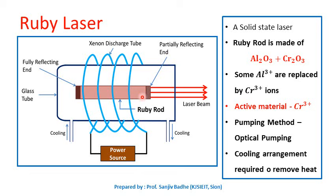Generally, in a ruby laser, a ruby rod of length 4 cm and diameter of 0.5 cm is used. The pumping method used is optical pumping. A xenon flash tube around the ruby rod provides the light energy to excite the chromium ions from the lower level to higher energy levels. Only a part of this energy is used to pump the chromium ions, and the rest results in heating of the apparatus — that is why a cooling arrangement is necessary.